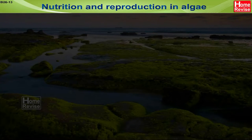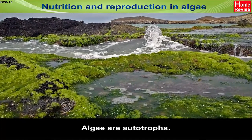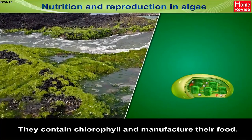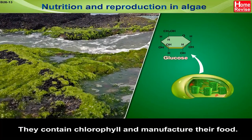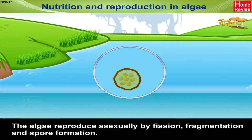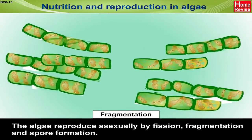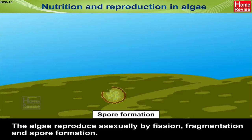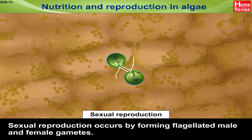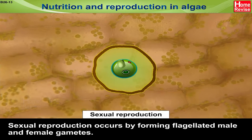Nutrition and Reproduction in Algae. Algae are autotrophs. They contain chlorophyll and manufacture their own food. The algae reproduce asexually by fission, fragmentation and spore formation. Sexual reproduction occurs by forming flagellating male and female gametes.